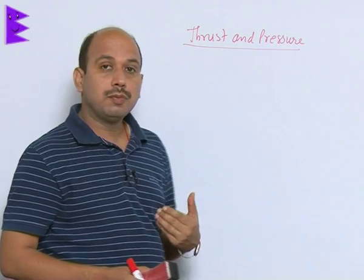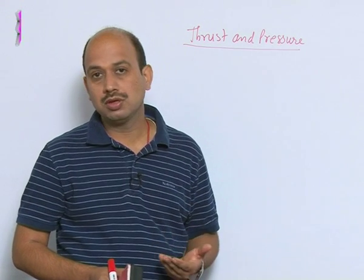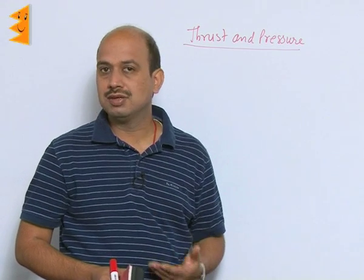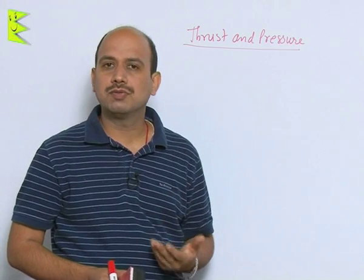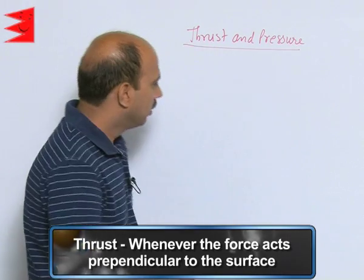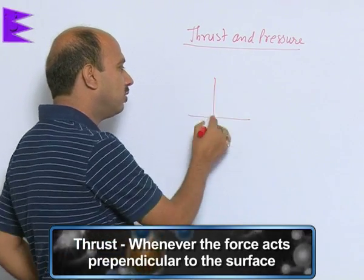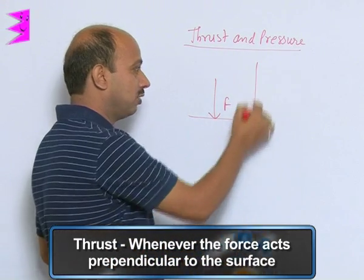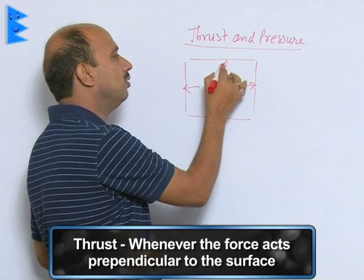Suppose you are taking another example — even if you are wearing shoes and applying some force, if you are standing on a weighing machine, your weight can be measured by the weighing machine. So these are about the forces. Whenever a force acts perpendicular to the surface, suppose you have taken any surface and a force is acting perpendicular to it — this force may be in any direction; it may be perpendicular to this side, or that side.